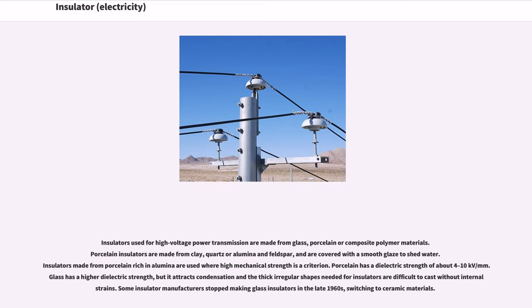Insulators used for high-voltage power transmission are made from glass, porcelain, or composite polymer materials. Porcelain insulators are made from clay, quartz or alumina and feldspar, and are covered with a smooth glaze to shed water. Insulators made from porcelain rich in alumina are used where high mechanical strength is a criterion.